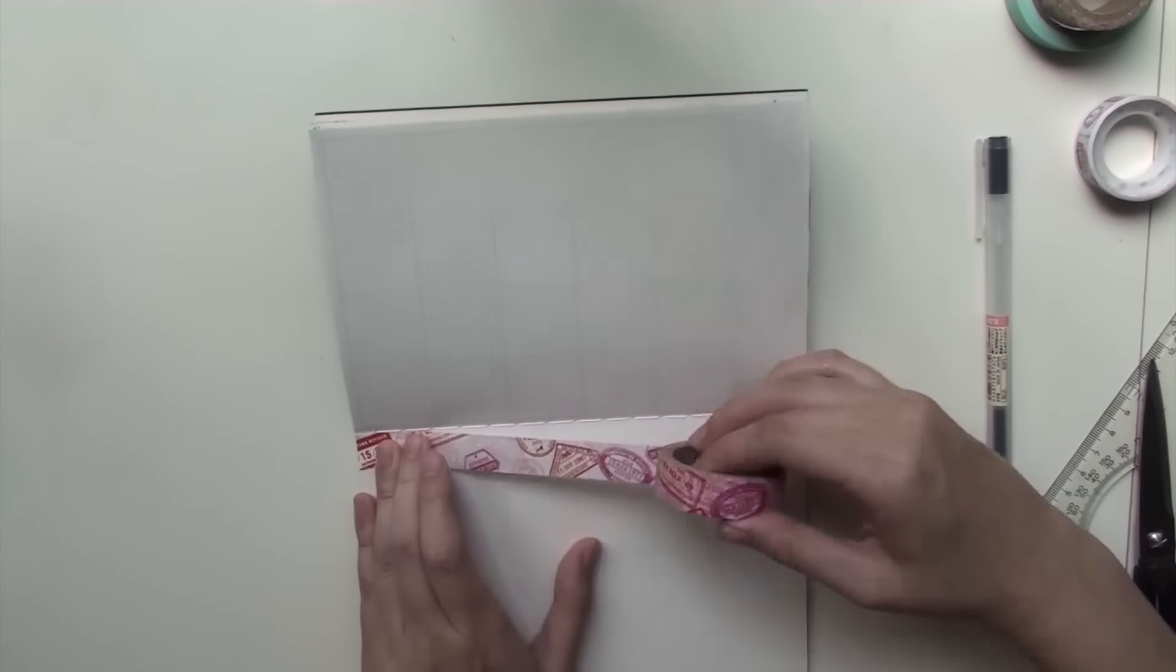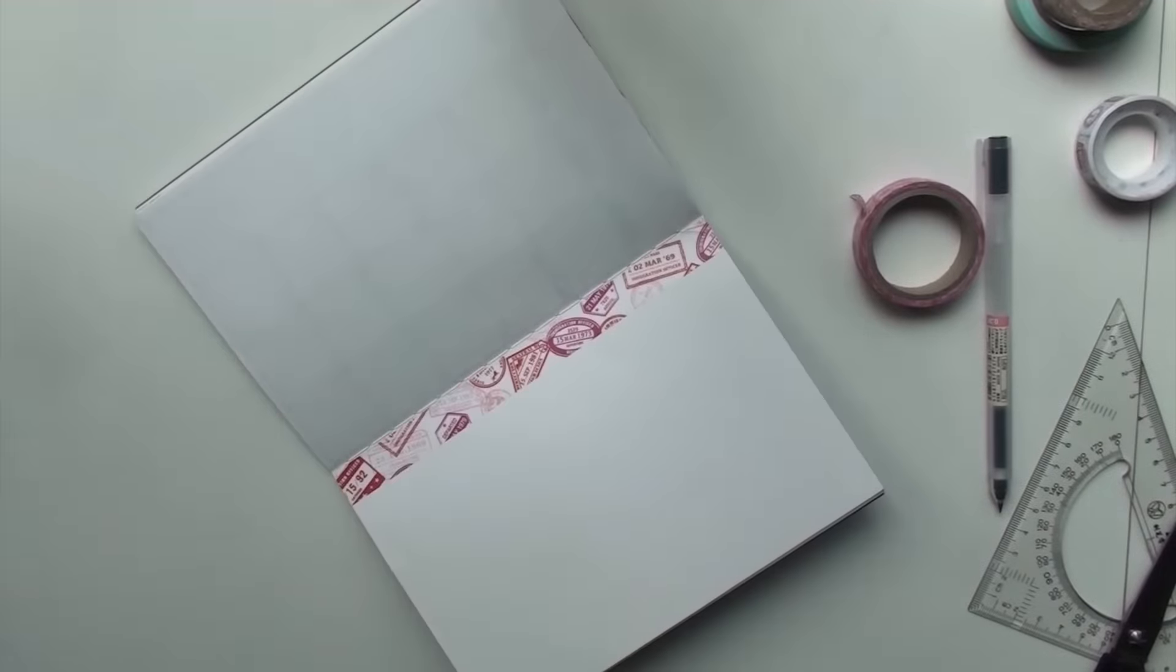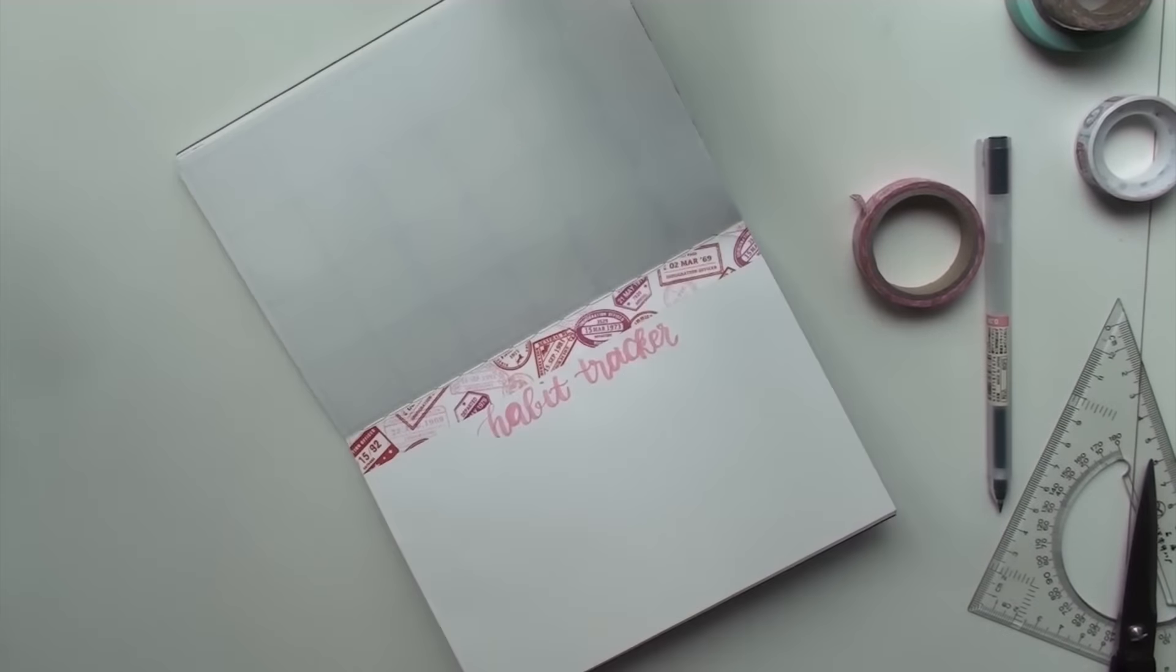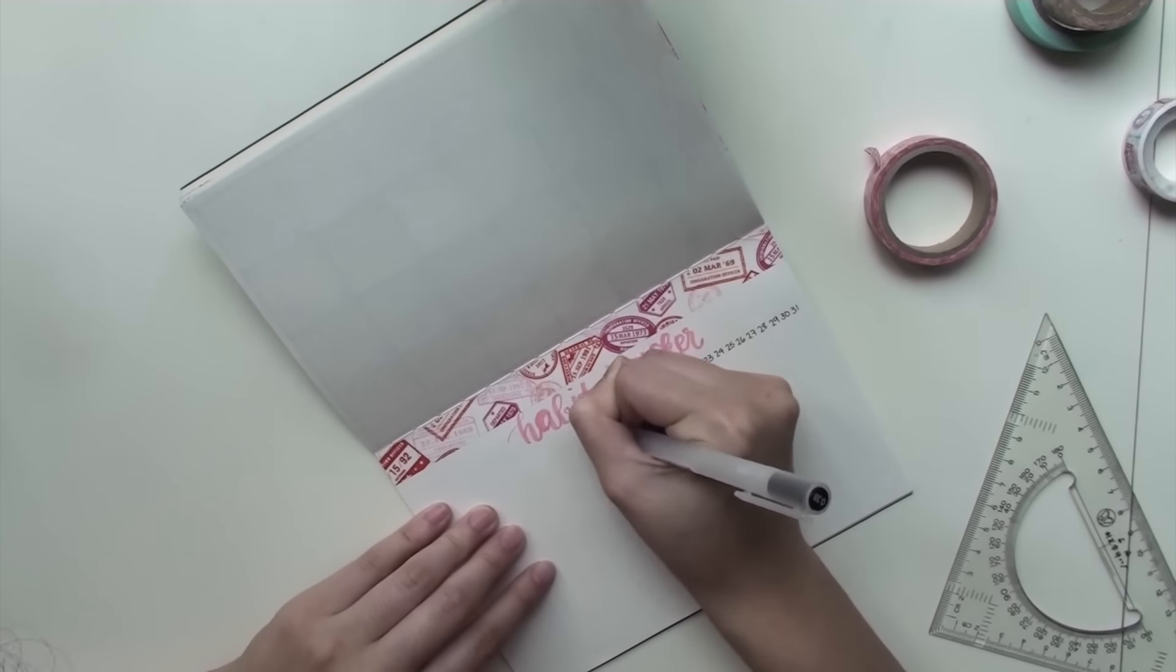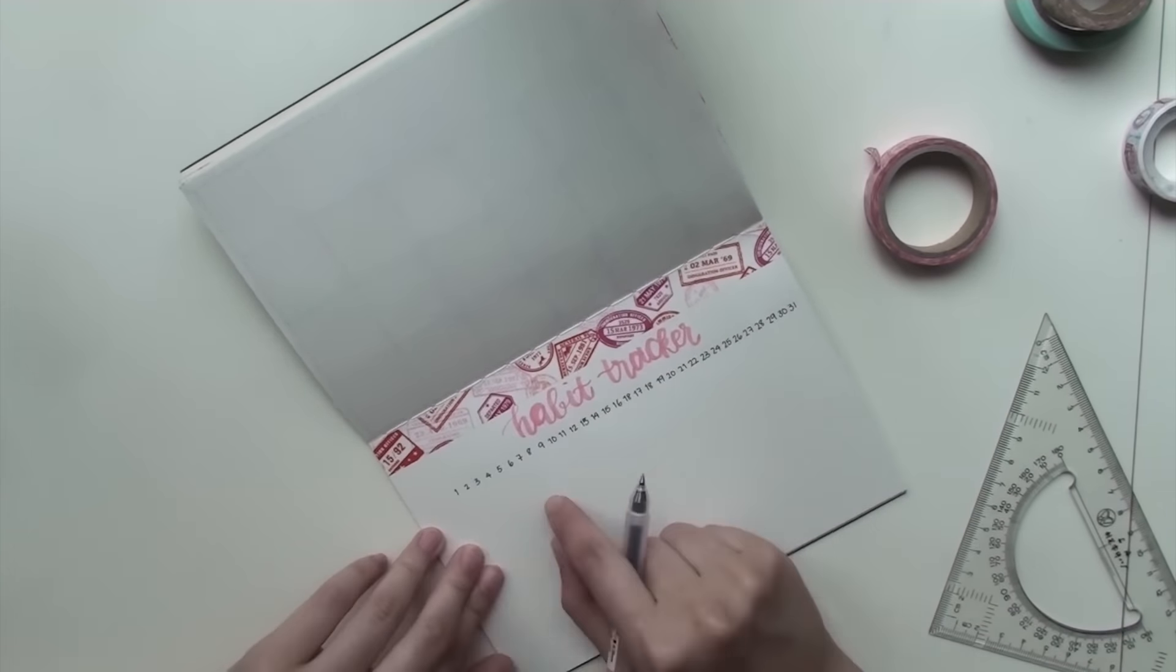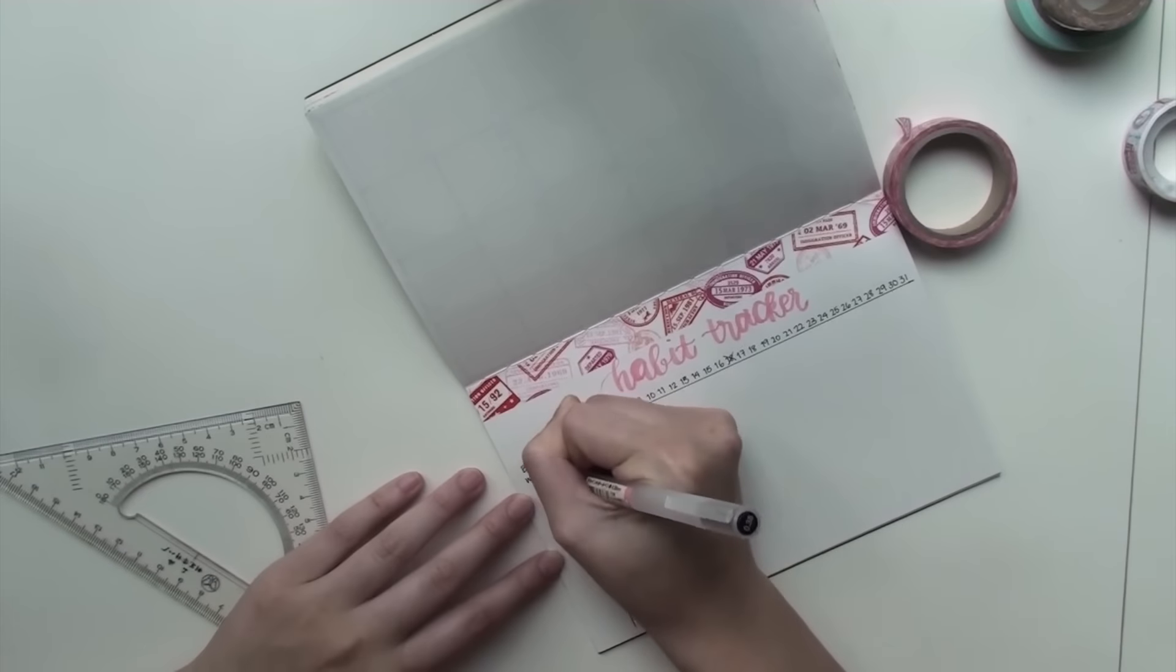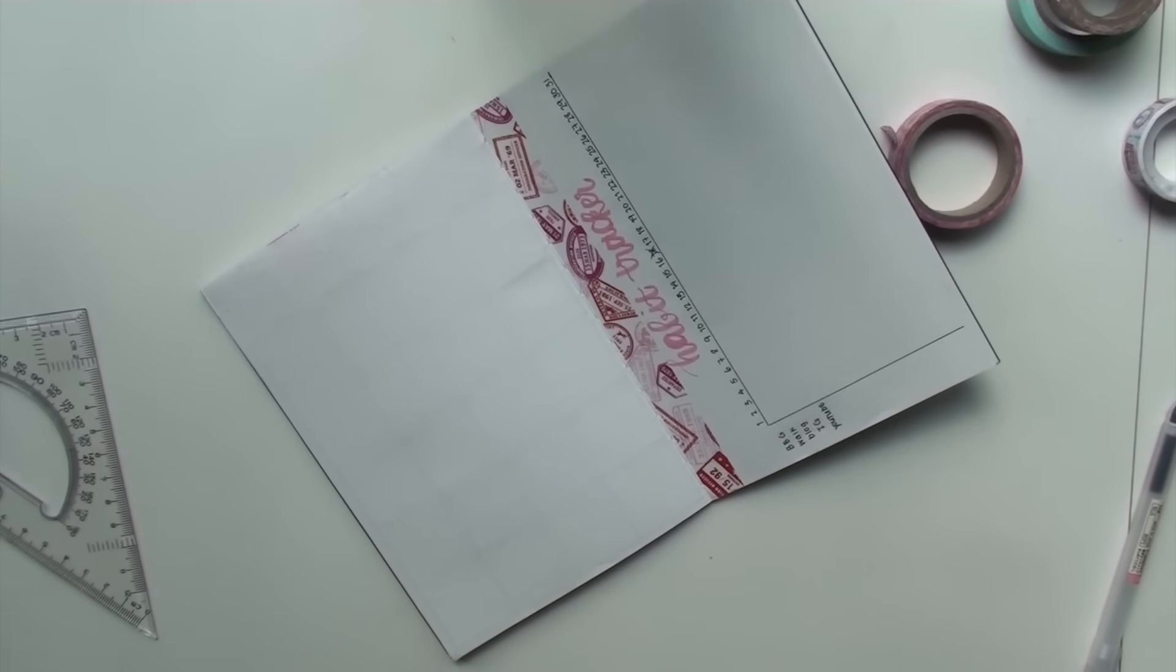Next I'm setting up my habit tracker. I'm writing the title with my kuretake zig pens and then I just write the dates on the very top. I accidentally screwed up and wrote 18 twice but I'm just writing the different habits I want to track on the side like working out and posting on my blog.